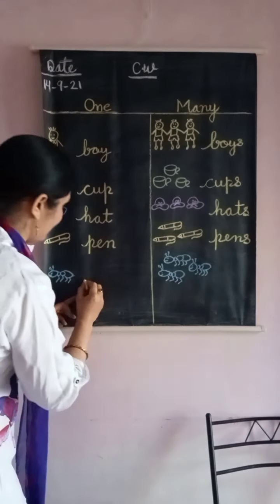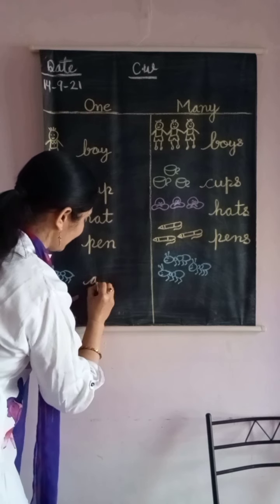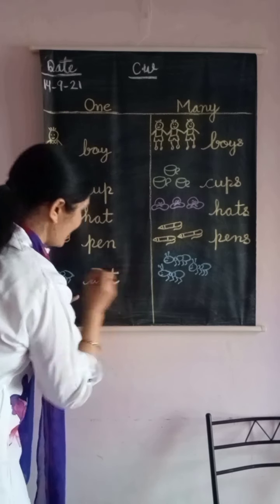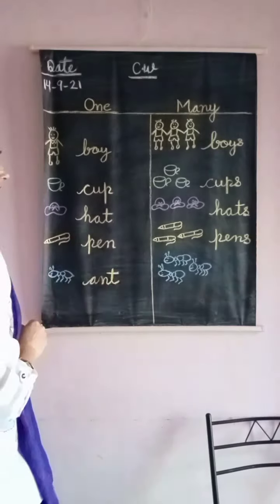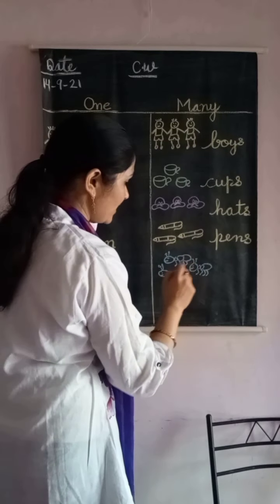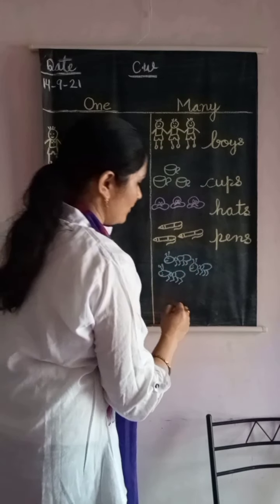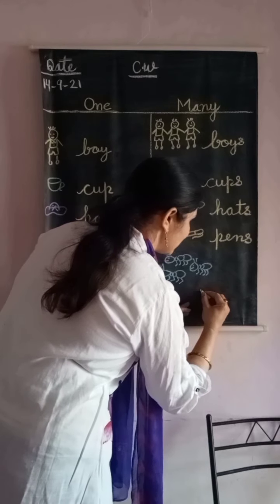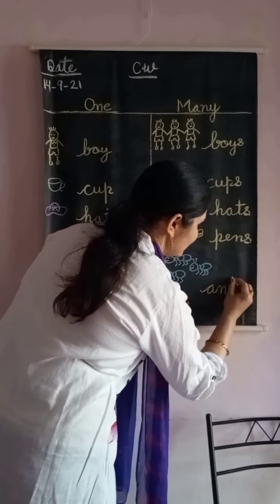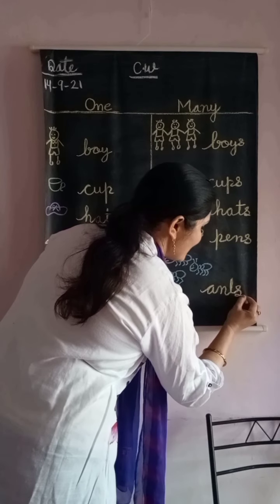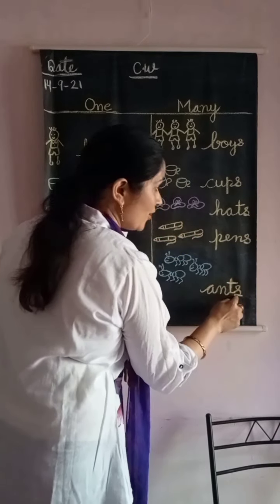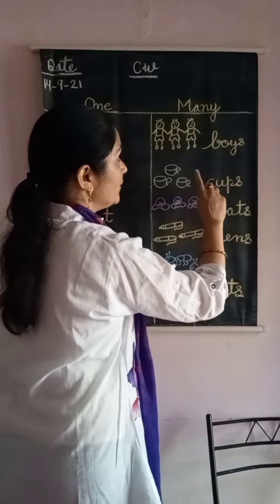Ant — one ant. A, N, T — ant. Only a single ant. Now there are many: one, two, three. So we will write ants — A, N, T, S. S is for many — plural. I hope you understood one and many.